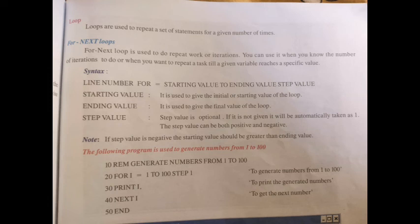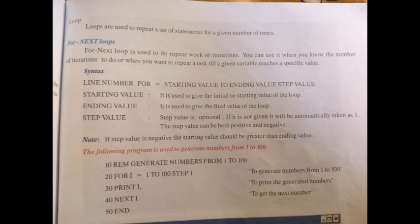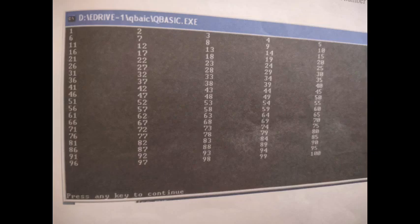So it will be added 1 by 1: 1 plus 1 is 2, next 2 will be printed, then 2 plus 1 is 3, 3 will be printed, and it goes on with just 5 lines of coding. Print i, Next i — this i will be printed 1 by 1. For i = 1 to 100, step 1: it prints with an increment count of 1 each time, going on up to 100. You can see the output — 1 to 100 is printed.